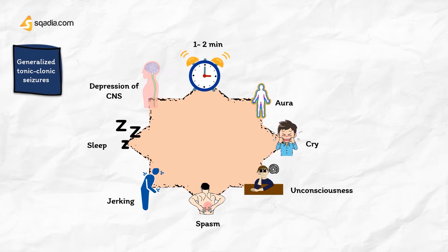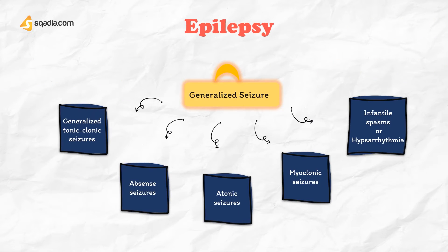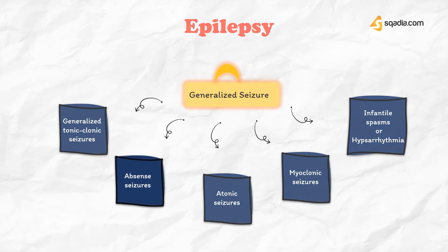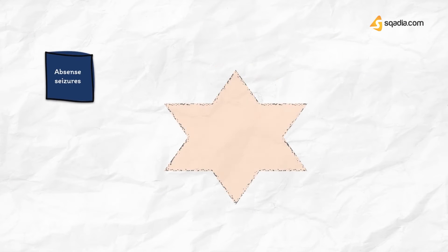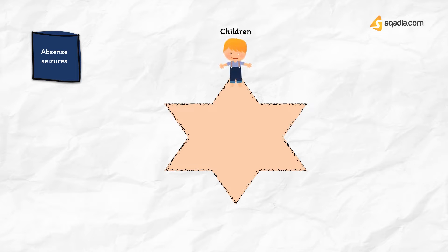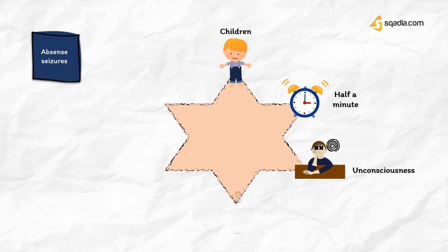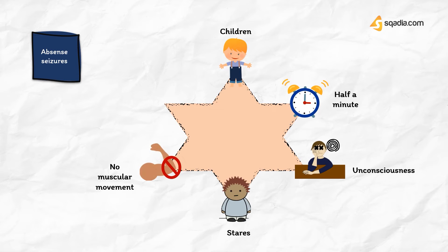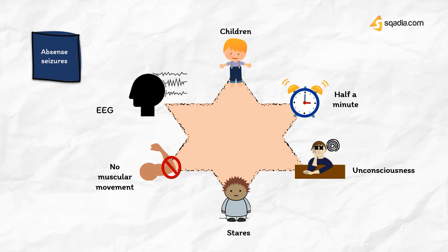Absence seizures are also prevalent in children and last about half a minute. There is momentary loss of consciousness; the patient apparently freezes and stares in one direction. There is no muscular component or only little bilateral jerking. EEG shows a characteristic three cycles per second spike and wave pattern.